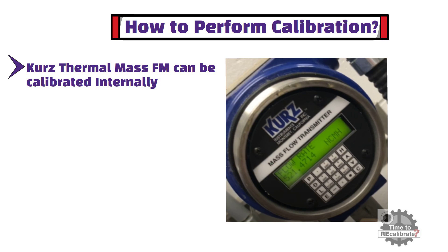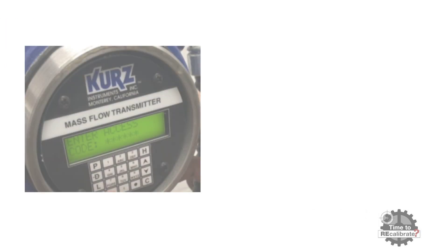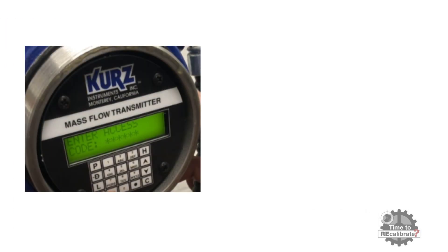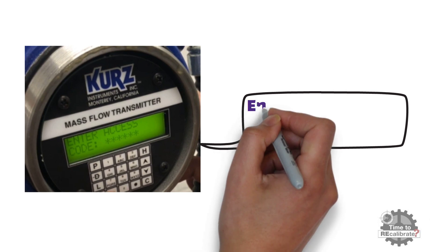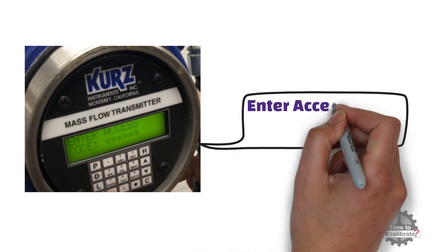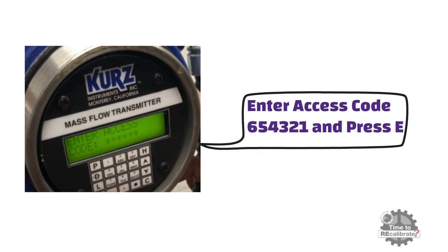To access the calibration menu, press the E button. As you can see from the picture, the enter access code screen will appear. The access code is 6, 5, 4, 3, 2, 1. Enter this code and press the E button.